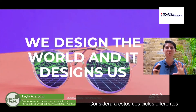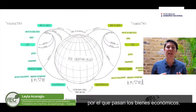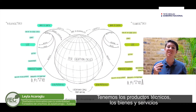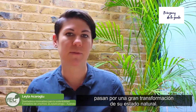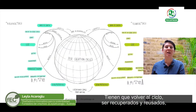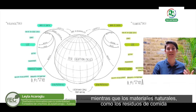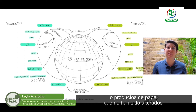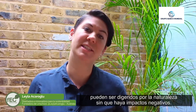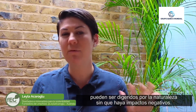What is fascinating about the circular economy is that it looks at two different cycles that things moving through the economy go through. You have technical products — goods and services made from technically altered materials like your cell phone or any technology — but also buildings and products we create for daily life are often very much transformed from the natural world, so they need to be cycled back through, recaptured, and reused. Whereas natural materials such as food waste or paper products that haven't been altered can be digested back into nature without negative impacts.